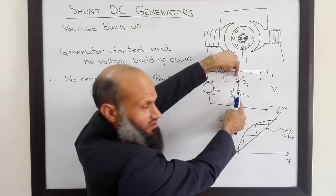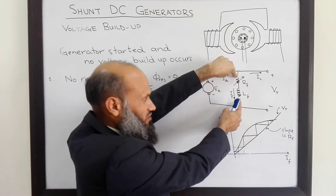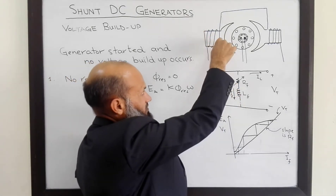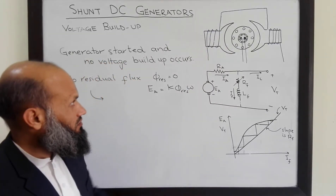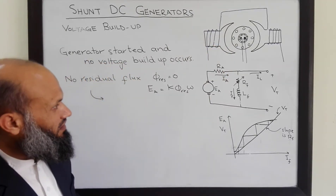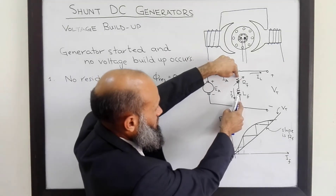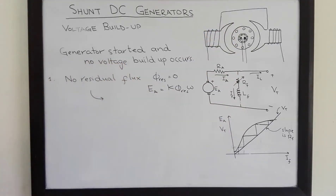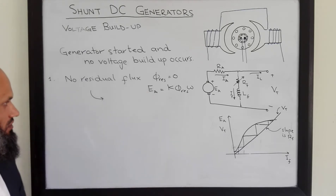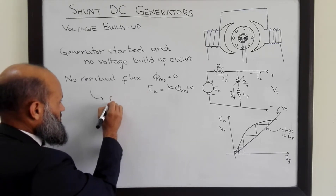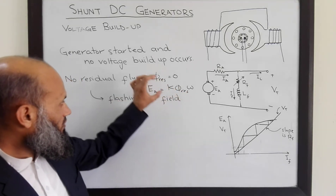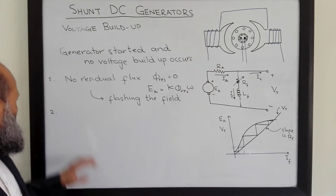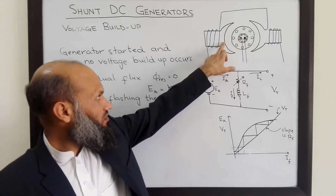The possible solution when there is no residual flux is to remove the field winding from the circuit, connect it to a separate voltage source for a brief time. Current will flow in the field windings and magnetize the electromagnets. Even when the external voltage source is removed, some residual flux will remain, and then voltage buildup will occur. This process is called flashing the field.